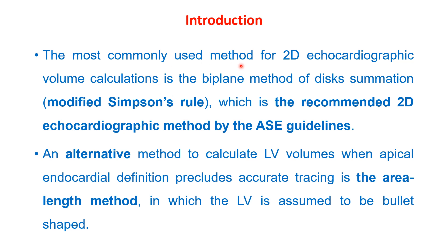The most commonly used method for 2D echocardiographic volume calculation is the biplane method of disc summation, or modified Simpson's rule, which is the recommended 2D echocardiographic method by the American Society of Echocardiography guidelines. An alternative method when endocardial definition precludes accurate tracing is the area-length method, in which the LV is assumed to be prolate ellipsoid in shape.